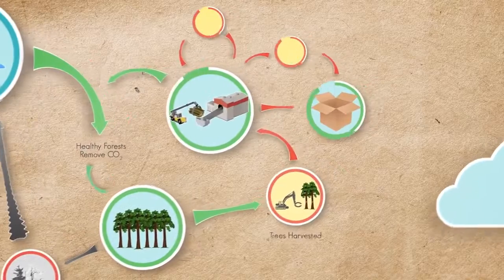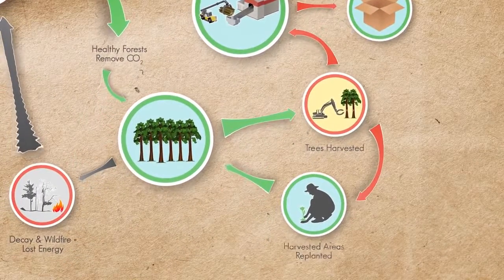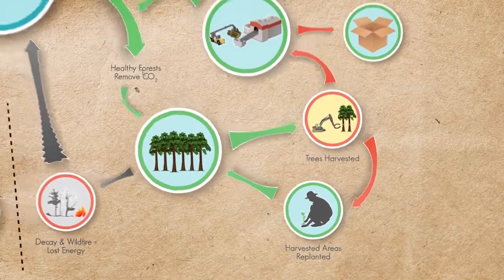Trees are harvested for manufacturers to make paper and wood products. Those trees are replaced with new trees that continue to absorb CO2.